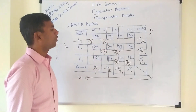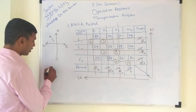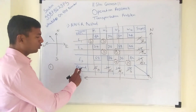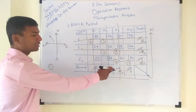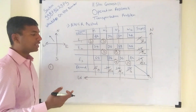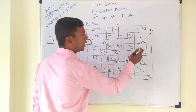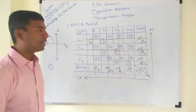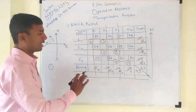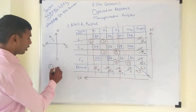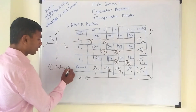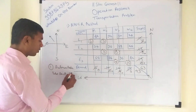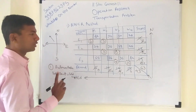This is the way of solving the North-West Corner method. One important thing: before you start solving, you have to check whether this problem is balanced or not. To check balance, total the demand: 6 + 10 = 16, 16 + 12 = 28, 28 + 15 = 43. Total demand is 43. Total the supply: 11 + 13 = 24, 24 + 19 = 43. Total supply is 43. Both totals are the same — this is a balanced problem. A balanced problem means total demand equals total supply.